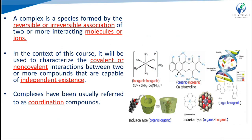In that donor-acceptor system, the donor is a neutral molecule or ion of non-metallic structure that can donate an ion pair of electrons. The acceptors are metallic ions, or sometimes neutral atoms, that accept a share in the pair of electrons. The complex is a species formed by the reversible or irreversible association of two or more interacting molecules or ions.